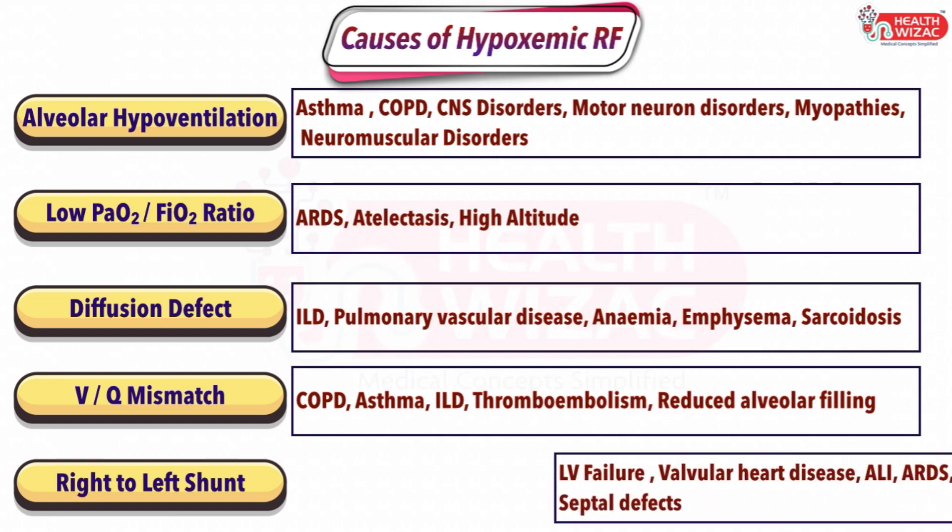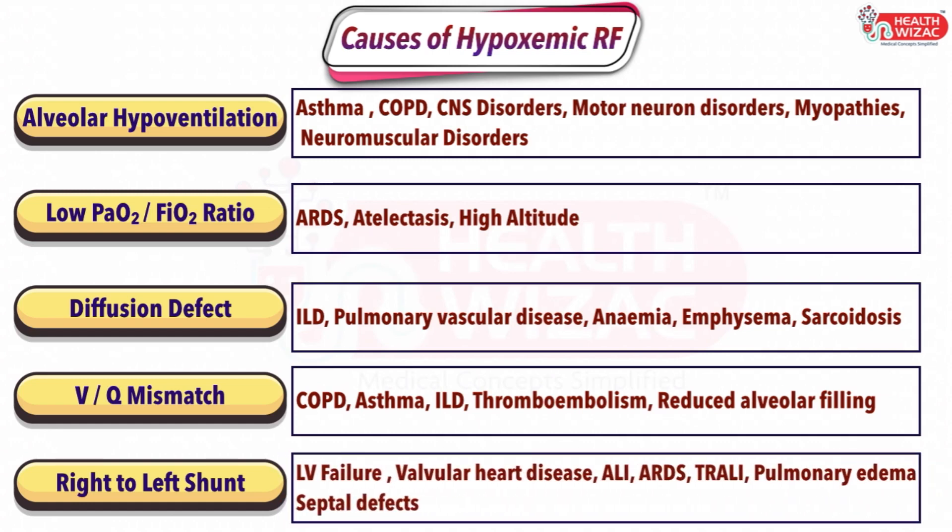Right-to-left shunt is present in conditions like LV failure, valvular heart disease, acute lung injury, adult respiratory distress syndrome, TRALI or transfusion-related acute lung injury, pulmonary edema, and septal defects.